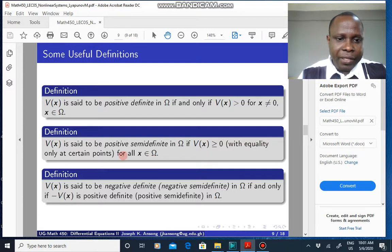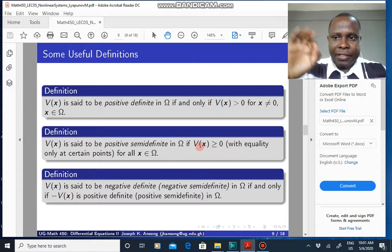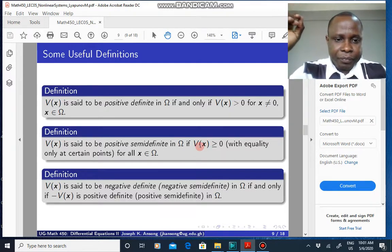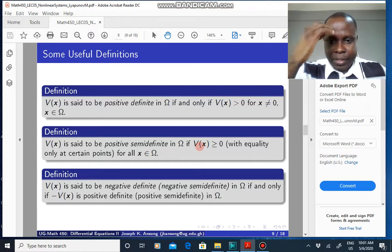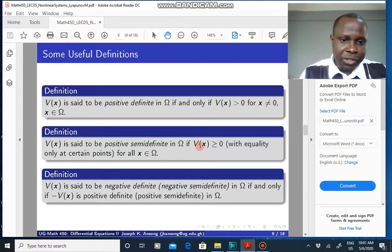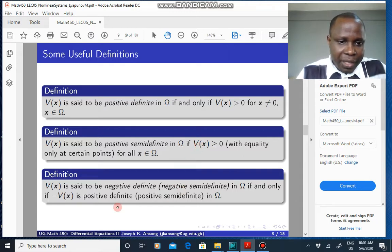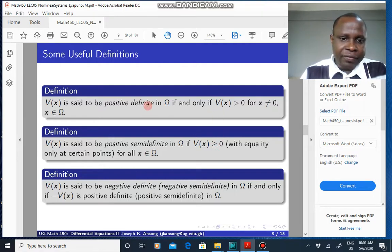If V is said to be positive semi-definite, if it is positive or equal to zero, where the equality occurs at certain points. So it could be zero at some points, but it is positive away from those points. Then we say that it is positive semi-definite. It is negative definite if you just reverse the inequalities. You get negative definite and you get negative semi-definite.